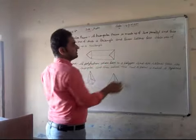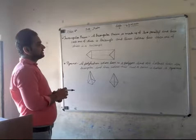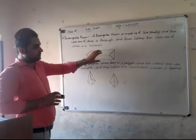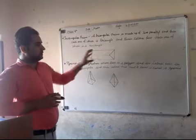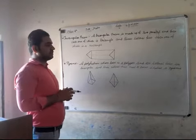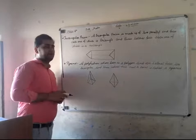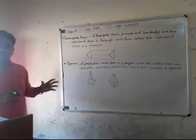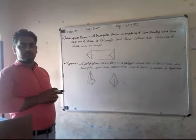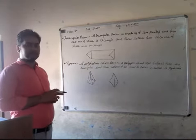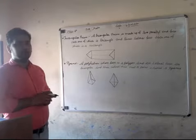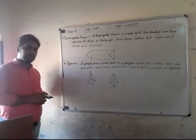And the three lateral faces, each one of which is a rectangle. So what do we say about a Triangular Prism? The starting face and the last face are the triangle faces, and the lateral surfaces are rectangles.